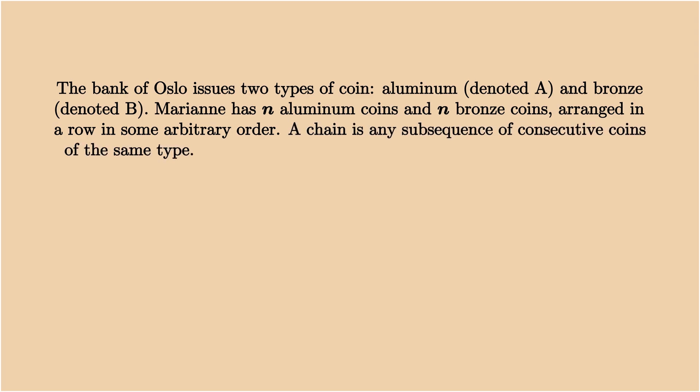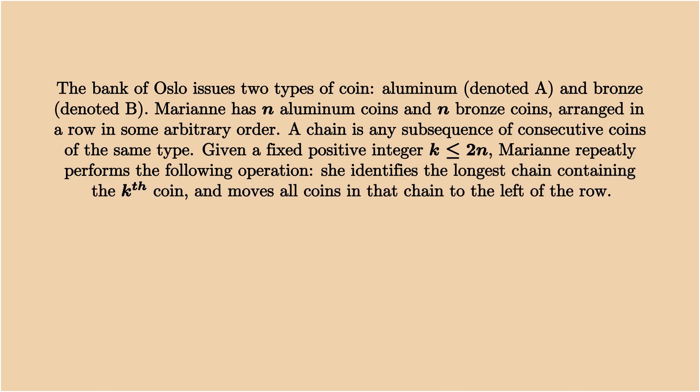We call it a chain for any subsequence of consecutive coins of the same type. Now given a fixed positive integer k, Marianne repeats the following operation. She identifies the longest chain containing the kth coin, and moves all those coins to the left of the row.